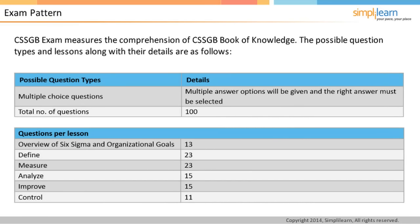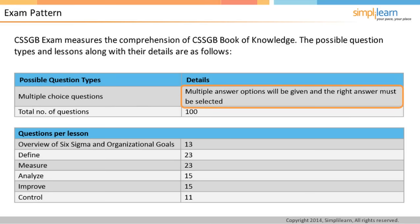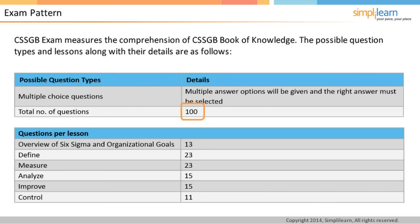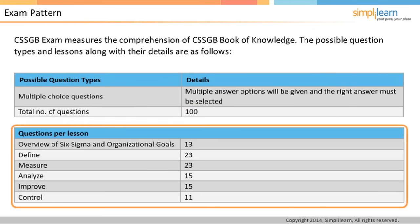This screen provides details of the exam pattern. The CSSGB exam measures the comprehension of the CSSGB Book of Knowledge. There will be multiple choice questions with multiple answer options, wherein the right answer must be selected. The total number of questions will be 100. The possible number of questions per lesson is listed on the screen.